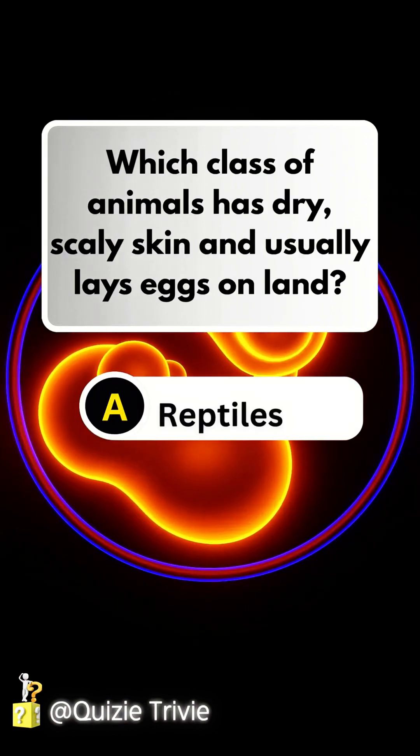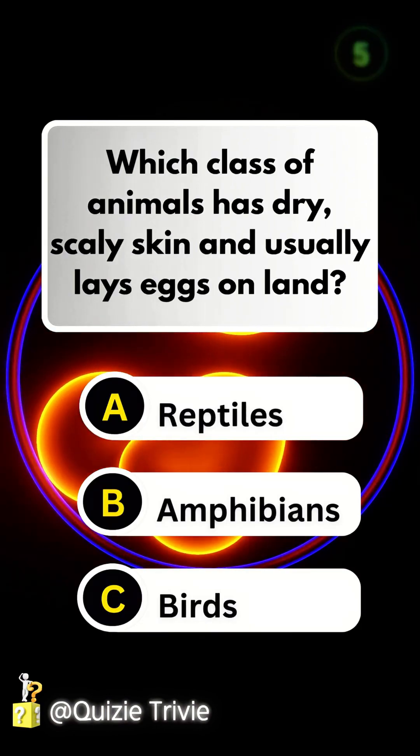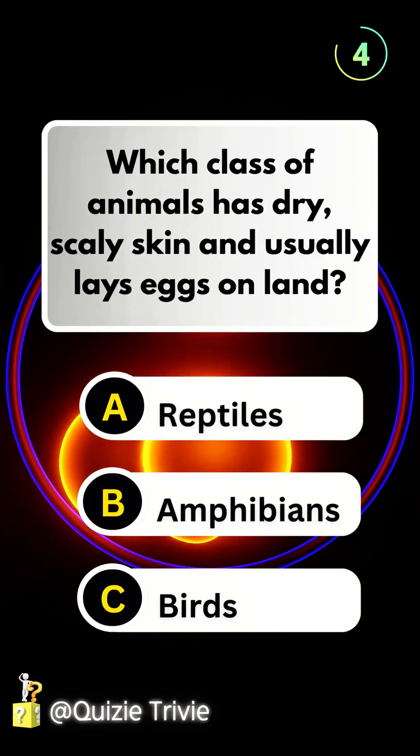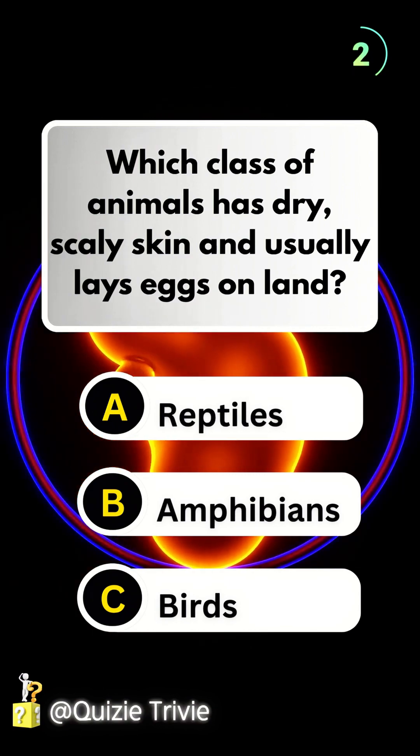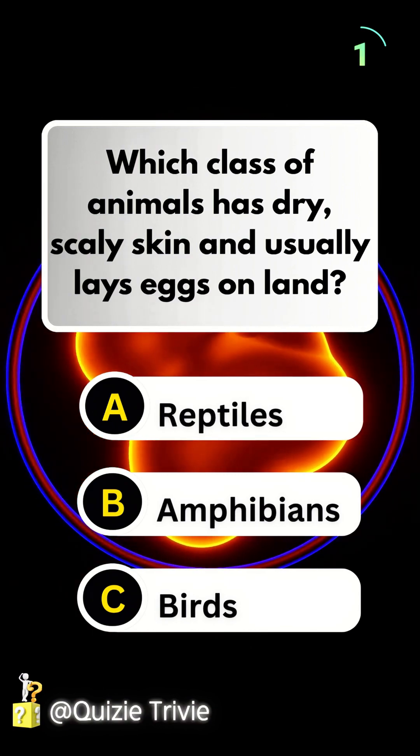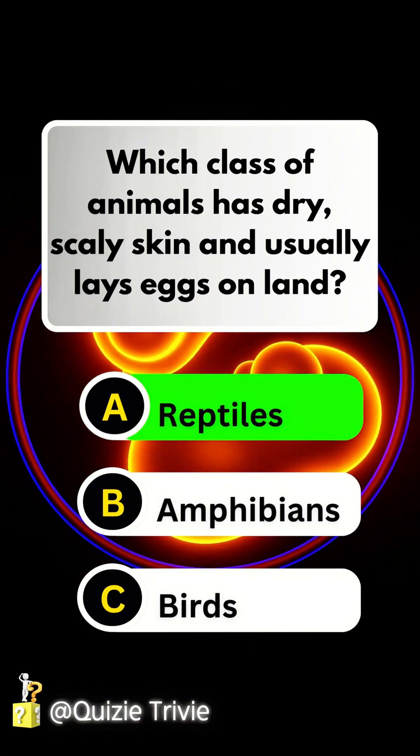Which class of animals has dry, scaly skin and usually lays eggs on land? Reptiles.